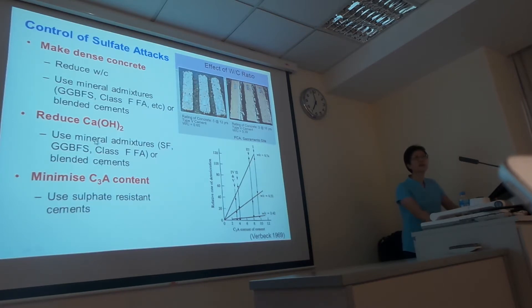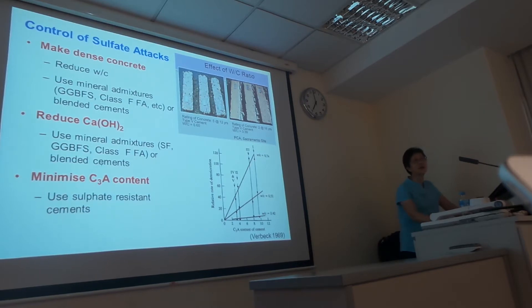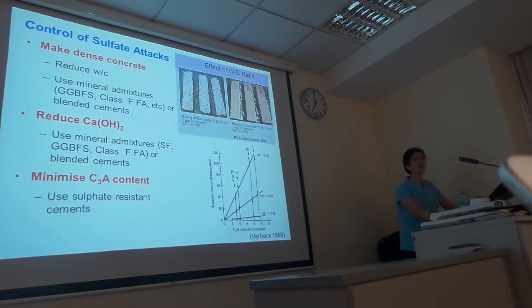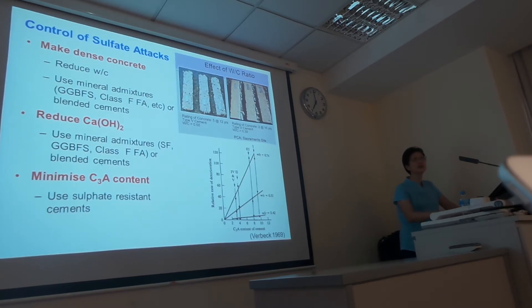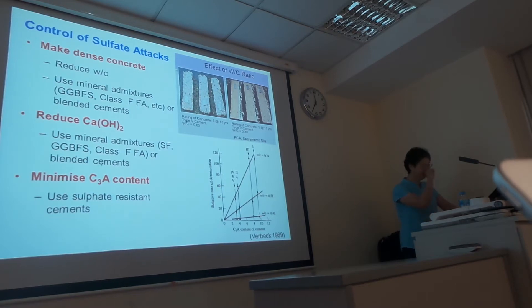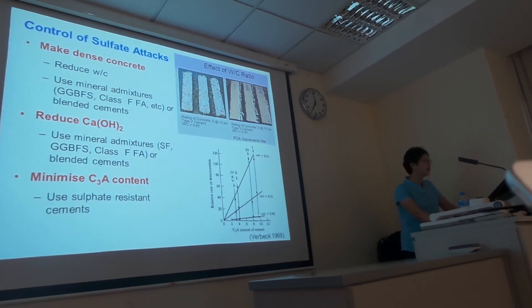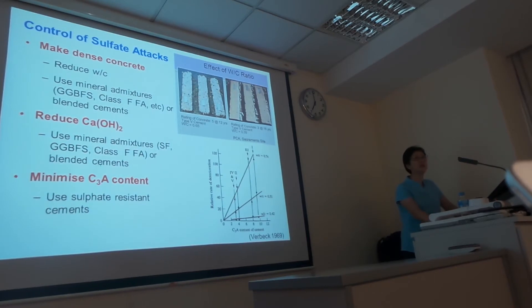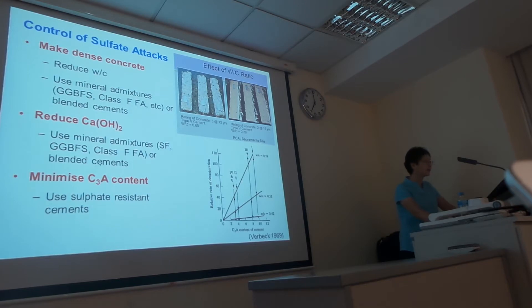The second control step addresses when sulfate penetrates into the concrete and reacts with calcium hydroxide to form gypsum. If we can reduce the calcium hydroxide in the concrete, we can reduce step two. Using mineral admixtures in concrete, due to pozzolanic reactions, reduces calcium hydroxide content but increases calcium silicate hydrates in concrete. So using mineral admixtures is very beneficial in terms of improving concrete resistance to sulfate attack.